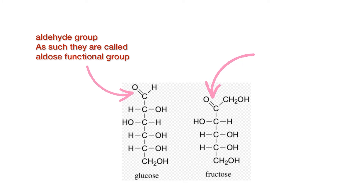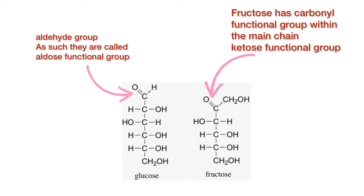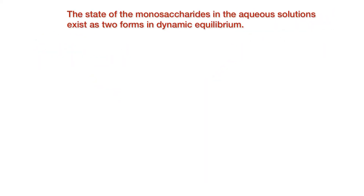Glucose has a carbonyl functional group bonded at the end of the main chain, therefore it is considered an aldehyde group — as such, they are called aldose. Fructose has a carbonyl functional group within the main chain, therefore it is considered to have a ketose functional group.